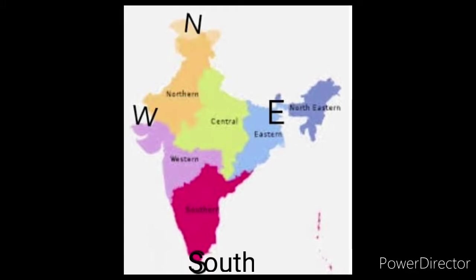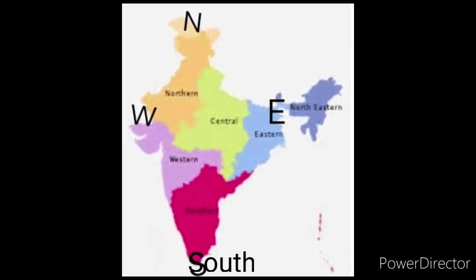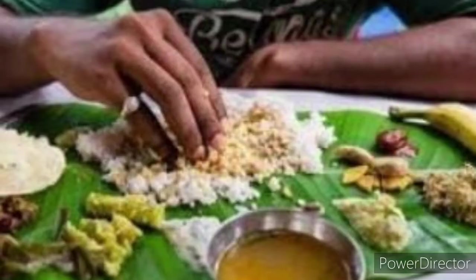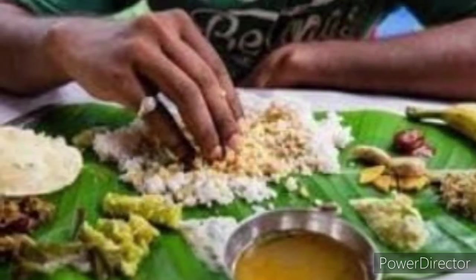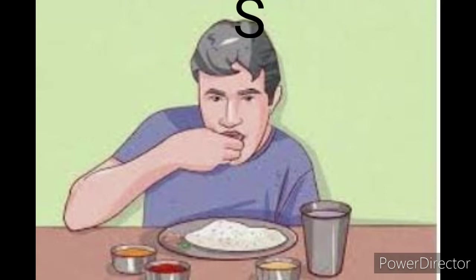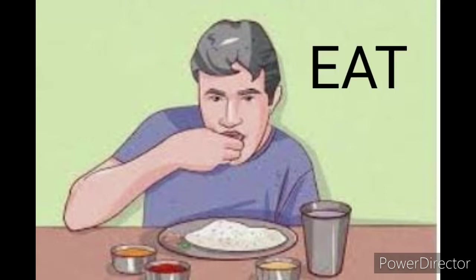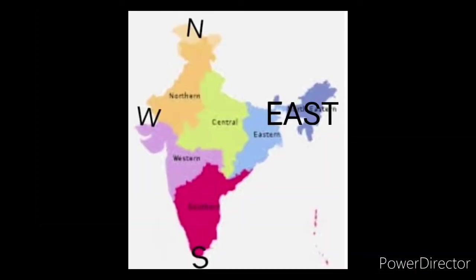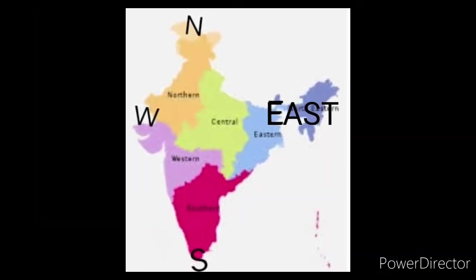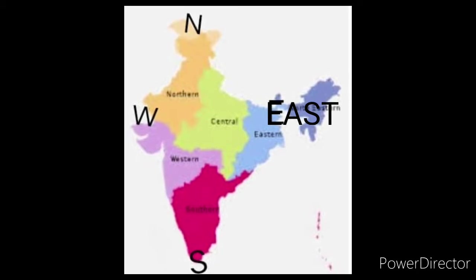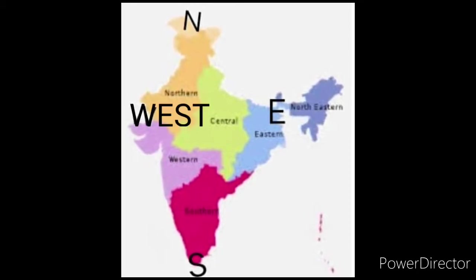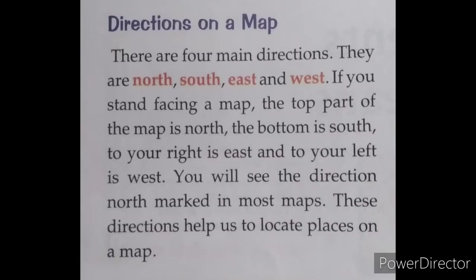What you see at the bottom is the south. You can remember east because the word EAST contains E-A-T — the letters you use for eating. Remove the S and it is E-A-T. So the right side of the map is east, and W-E-S-T is west. You will see the direction north marked in most maps. These directions help us to locate places on a map.